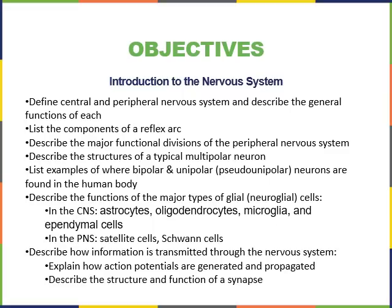In the central nervous system, the glial cells include astrocytes, oligodendrocytes, microglia, and ependymal cells. In the peripheral nervous system, they include satellite cells and Schwann cells. Additional objectives are to describe how information is transmitted through the nervous system, explain how action potentials are generated and propagated, and describe the structure and function of a synapse.